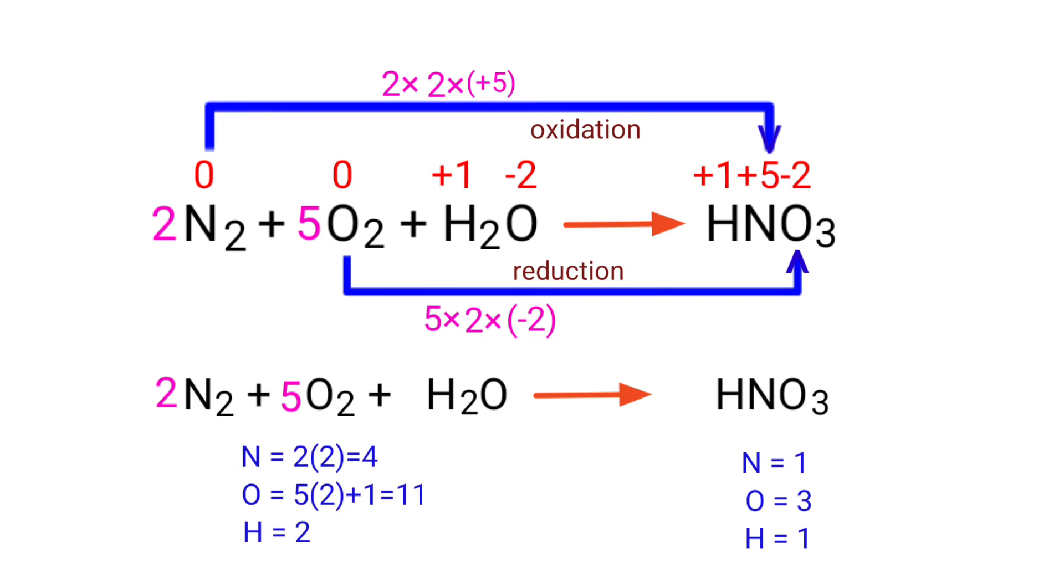The number of atoms are not balanced on both sides. To balance the chemical equation we need to make use of coefficients. A coefficient is a number that we place in front of a chemical formula. In this equation we need to balance the nitrogen atoms first. To do this we need to put a coefficient of 4 in front of HNO3.